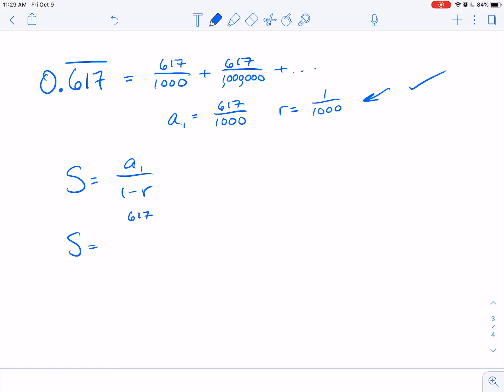So this is 617 over 1000 divided by 1 minus 1 over 1000, which equals 617 over 1000 divided by 999 over 1000.